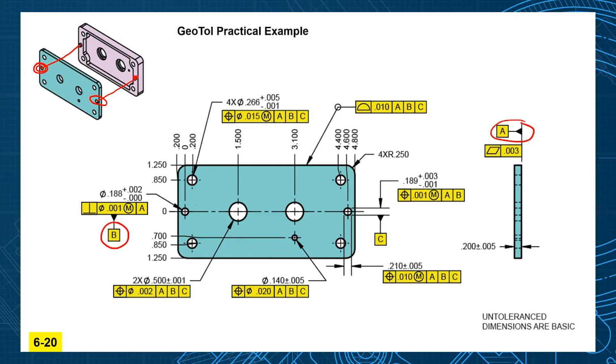So what did we select as the datum feature B? The one that is going to hold the pin, that's going to be your XY locator right there, locating in the Y and the X, giving you two translations.